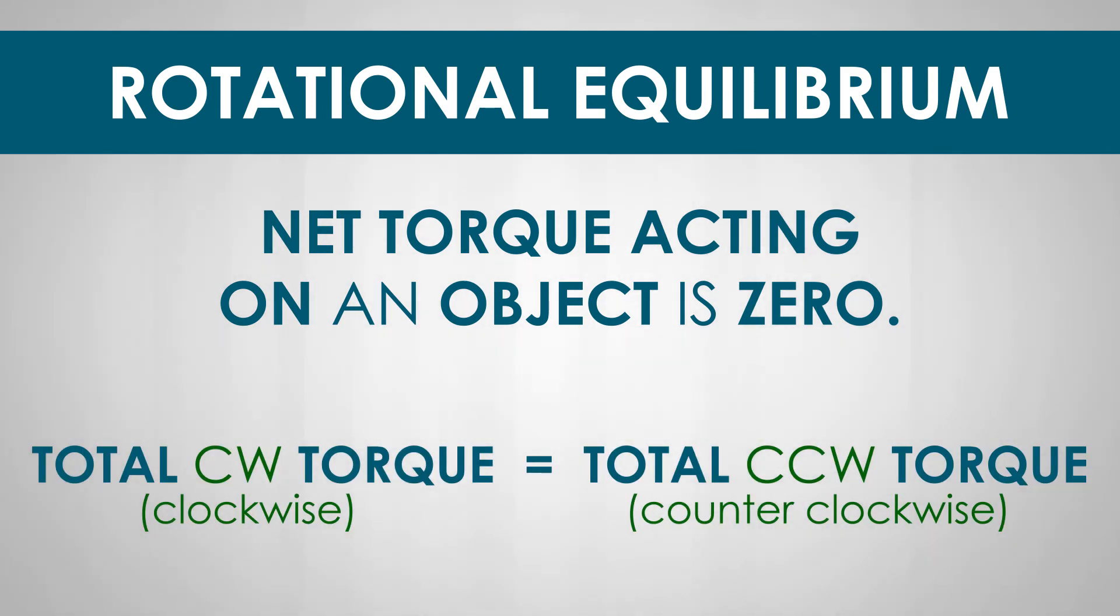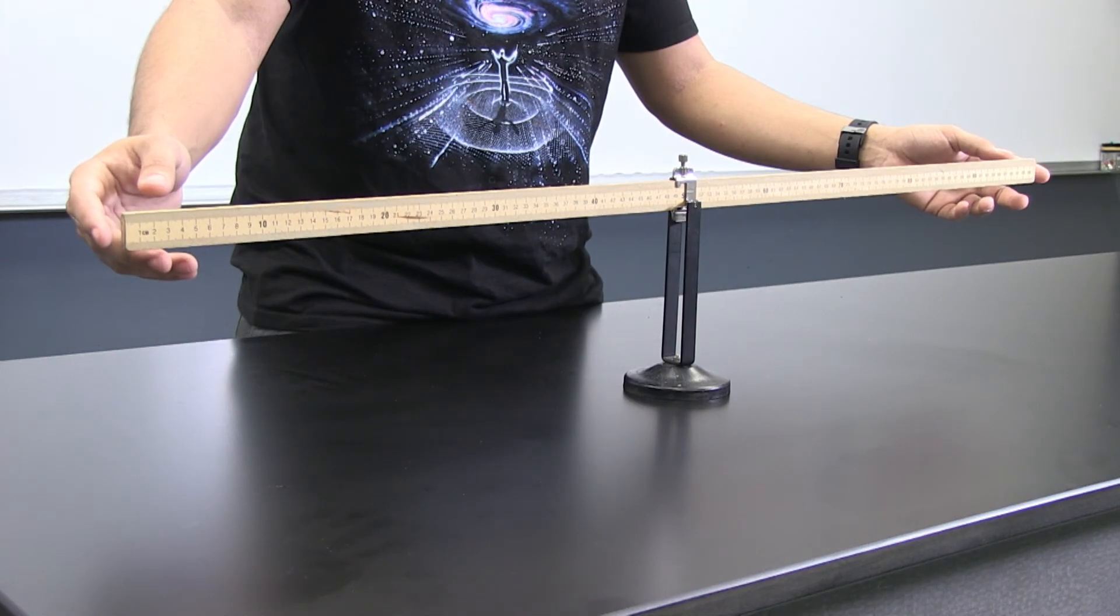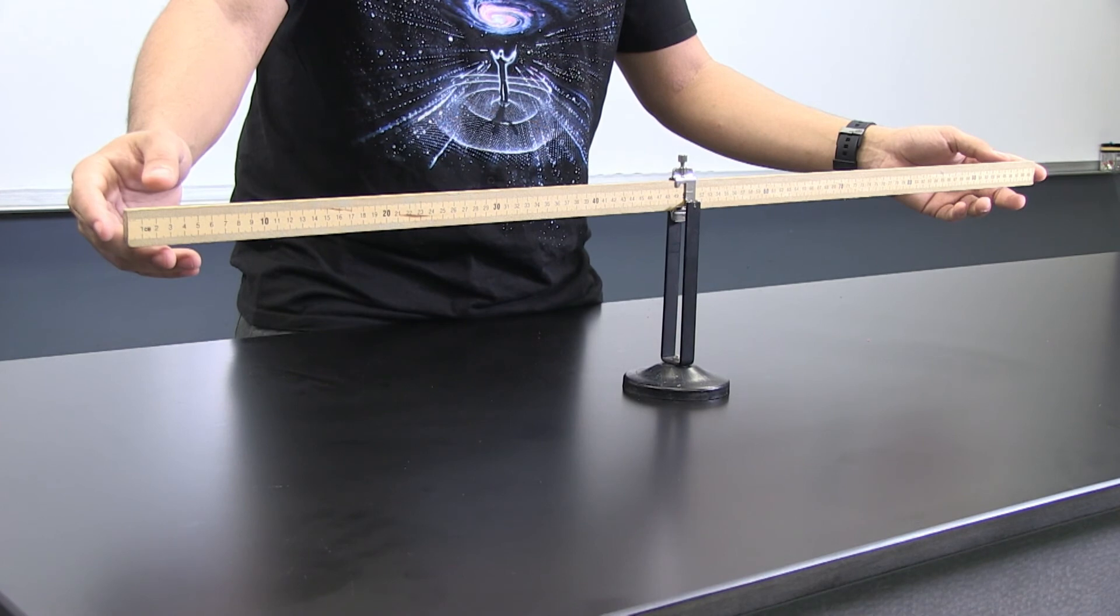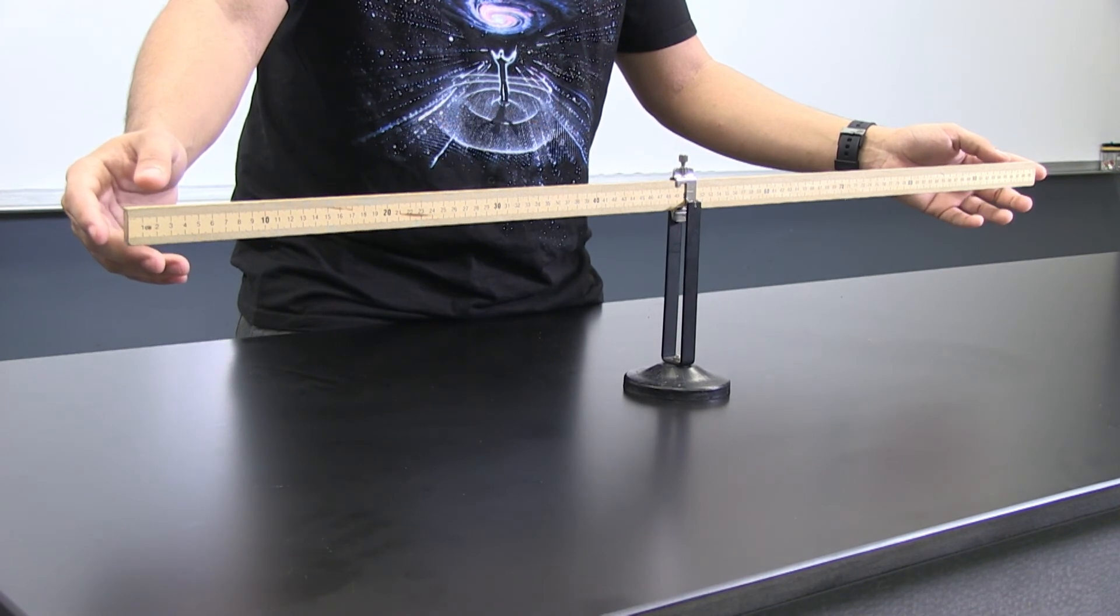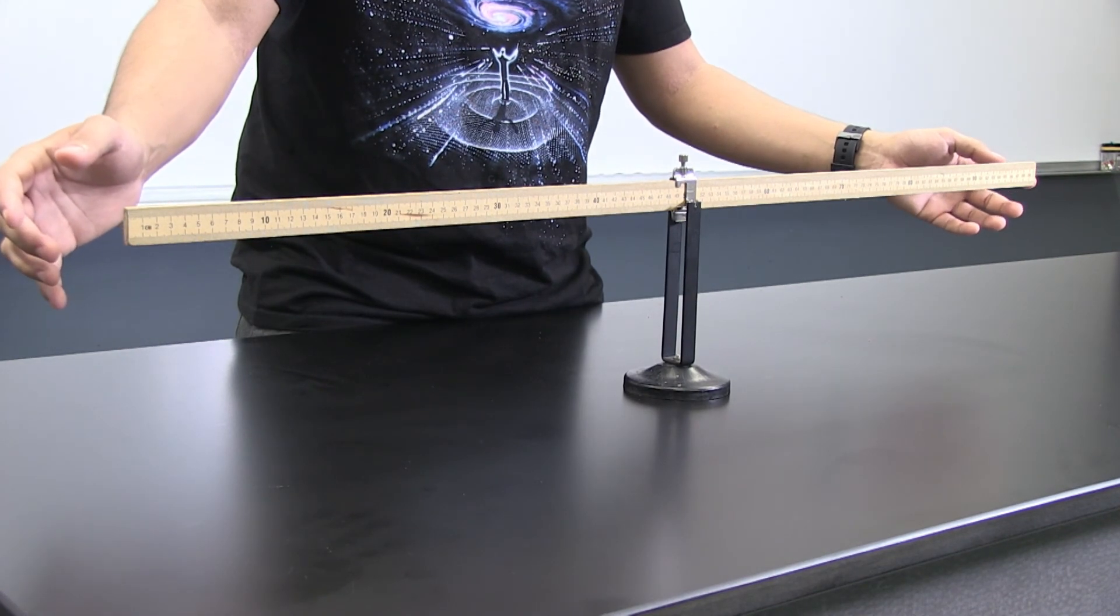For example, in this case the stick is supported right at the middle and the weight of the stick is acting through the pivot. There is no torque acting on the stick either clockwise or counterclockwise. The stick is in rotational equilibrium and balanced.